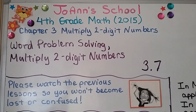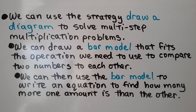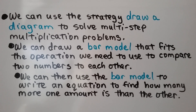This is the last lesson for Chapter 3. If you've missed all the previous lessons, you might become confused or lost with the methods we use. You can find the lessons linked in the description. We can use the strategy Draw a Diagram to Solve Multi-Step Multiplication Problems. We can draw a bar model that fits the operation we need to use to compare two numbers to each other.